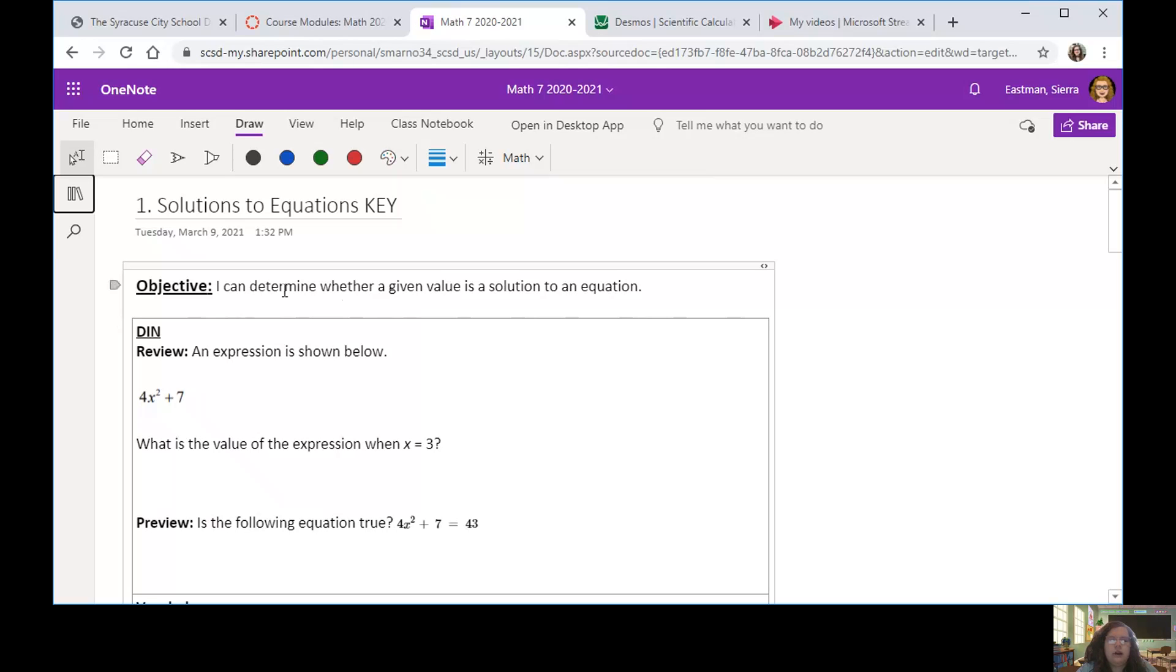What we're going to do is practice one more example of an expression and complete a similar problem that we did in Unit 5 by substituting in our value x equals 3 and finding the new value of the full expression. Then we're going to actually look at a full equation. We're moving on to equations, which have that equal sign. And we'll do some vocabulary review as well. We're going to determine what a solution to an equation is and see some examples that will not be solutions to equations.